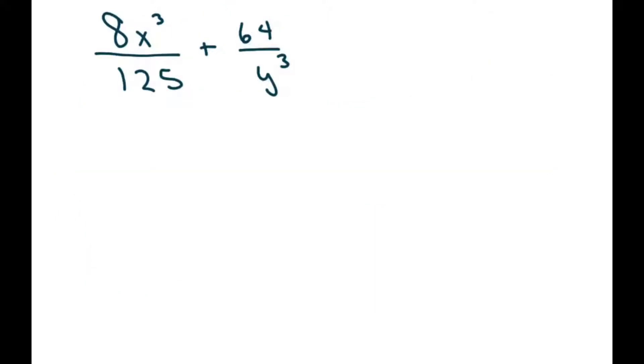And the last one we have is this one. I'm going to do the same thing, a cubed plus b cubed, and that equals a plus b times a squared minus ab plus b squared. So I'm going to set this up as cubes.